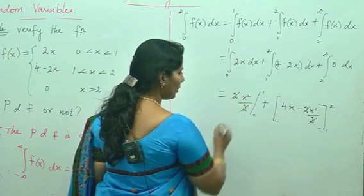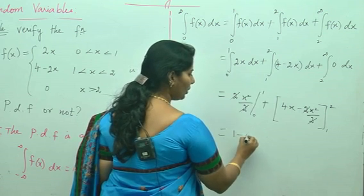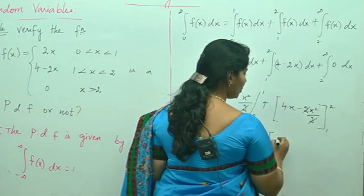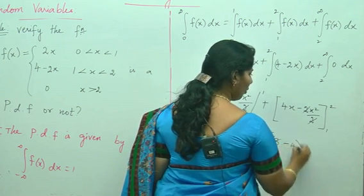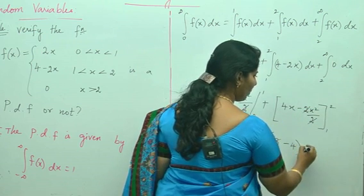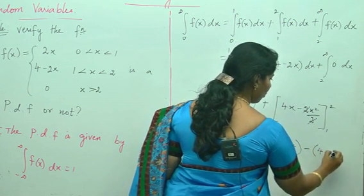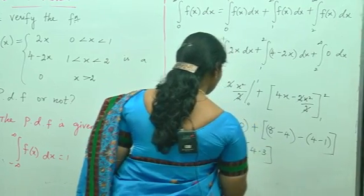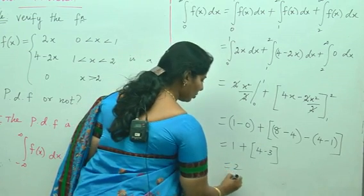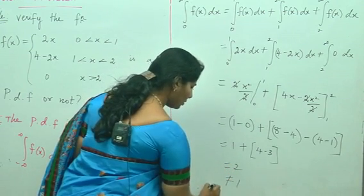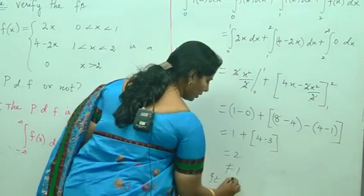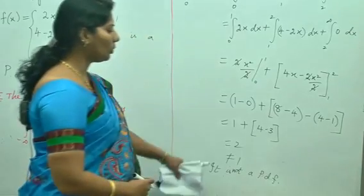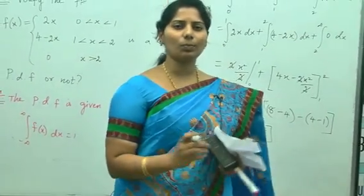Applying upper limit minus lower limit: for the first term, substituting upper limit 1 minus lower limit 0 gives 1. For the second term, substituting upper limit 2: 4(2) − 2 = 8 − 4 = 4; substituting lower limit 1: 4(1) − 1 = 3. So we get 1 + (4 − 3) = 1 + 1 = 2. Since this is not equal to 1, the given function is not a probability density function.